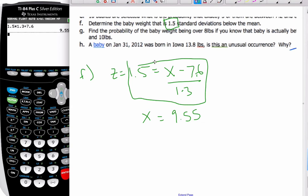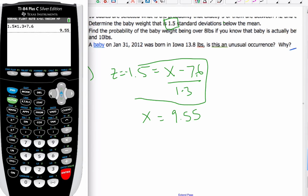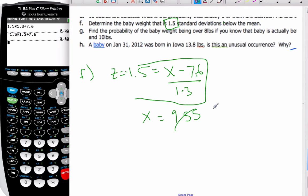That's the baby's weight that is 1.5 above the mean. However, I did above the mean. If I want below the mean, then I have to add a negative value. If I go back to my calculation and insert a negative, then the X value really is going to be 5.65.